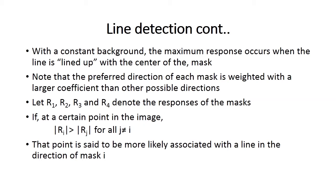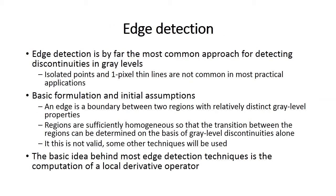Let R1, R2, R3, and R4 denote the responses of the masks defined in the previous slide. If at a certain point in the image Ri is greater than Rj for all j not equal to i, that point is said to be more likely associated with a line in the direction of the corresponding mask.